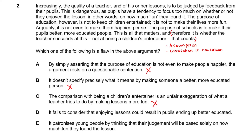Option D — 'enjoying lessons can result in people ending up better educated' — this is basically the missing assumption. It directly challenges the argument by pointing out that entertainment and education are not mutually exclusive. Option E — 'it patronizes young people by assuming their judgment will be based solely on how much fun they found the lesson' — this isn't really the key flaw; we're more concerned with the output of the teacher. Therefore D is the correct answer.